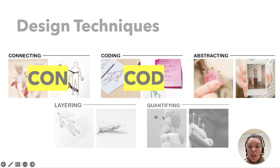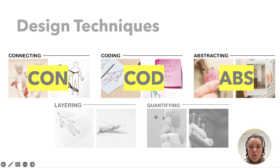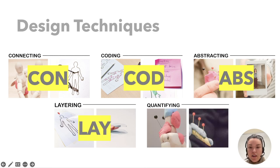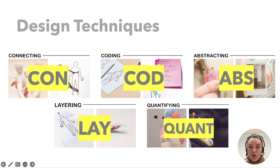Participants portrayed the body and their somatic sensations in more or less abstract or realistic ways, which we call abstracting, annotated as ABS. Participants also portrayed sensations that build on each other and tried to capture the inside and the outside of the body, which we called layering, annotated as LAY. Finally, people quantified varying degrees of intensity and importance to which sensations and emotions were felt, which we call QUANT.